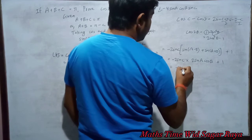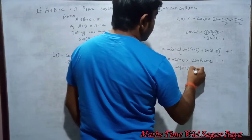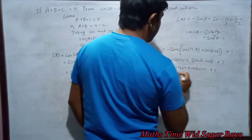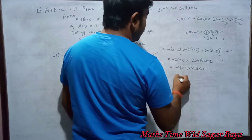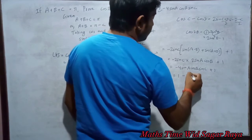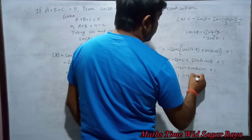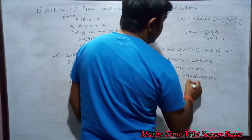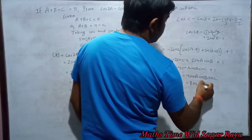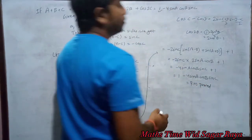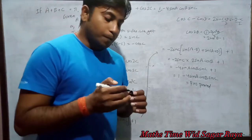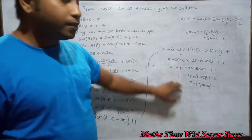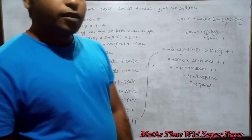Multiplying: minus 2 sin C into 2 sin A cos B gives minus 4 sin A cos B sin C, plus 1, which equals the RHS. The proof is complete.